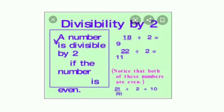First we will learn the divisibility rule for 2. A number is divisible by 2 if the number is even. Example: 18 is an even number, so it is divisible by 2.